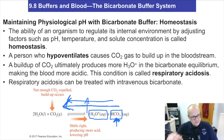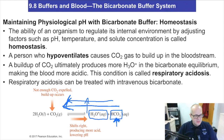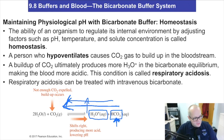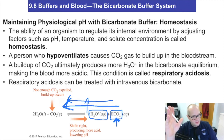So if we want to drive the equilibrium to the left, increase the concentration of bicarbonate and the equilibrium will go to the left. It'll decrease the concentration of acid in the blood — it'll increase the pH.